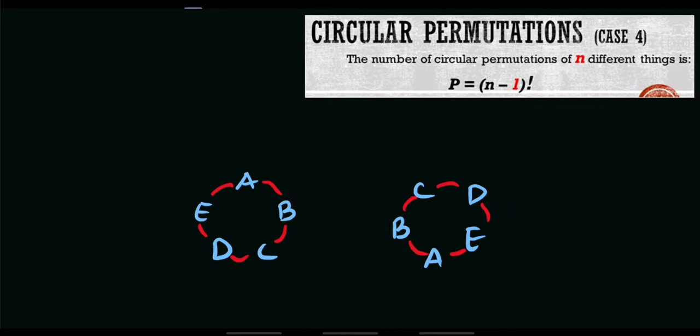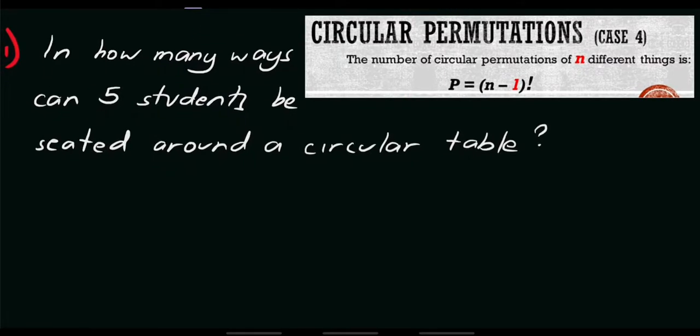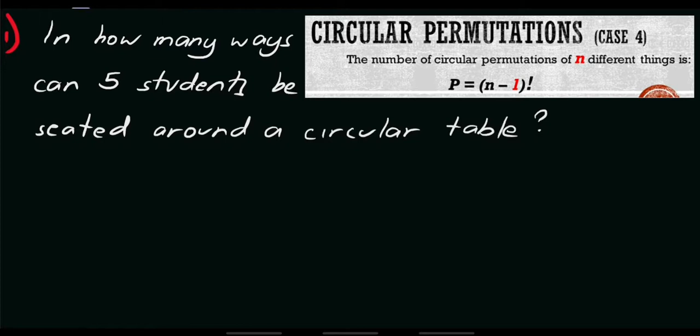So let's try to answer some problems. For example number 1. The question is, in how many ways can 5 students be seated around a circular table? Again, your first task is to determine the value of N. So what's the value of N? That's the total number we're talking about here. So here, we have 5 students. Automatically, N equals 5.